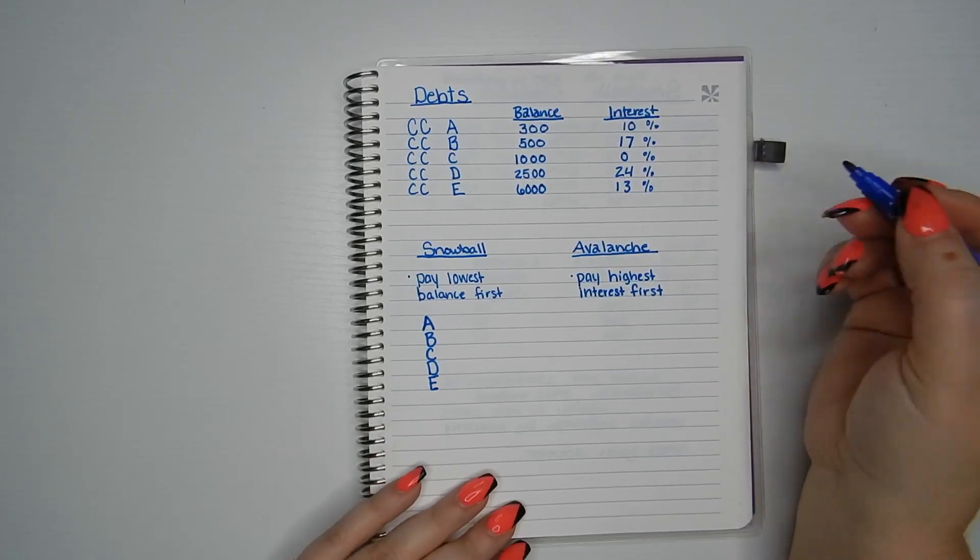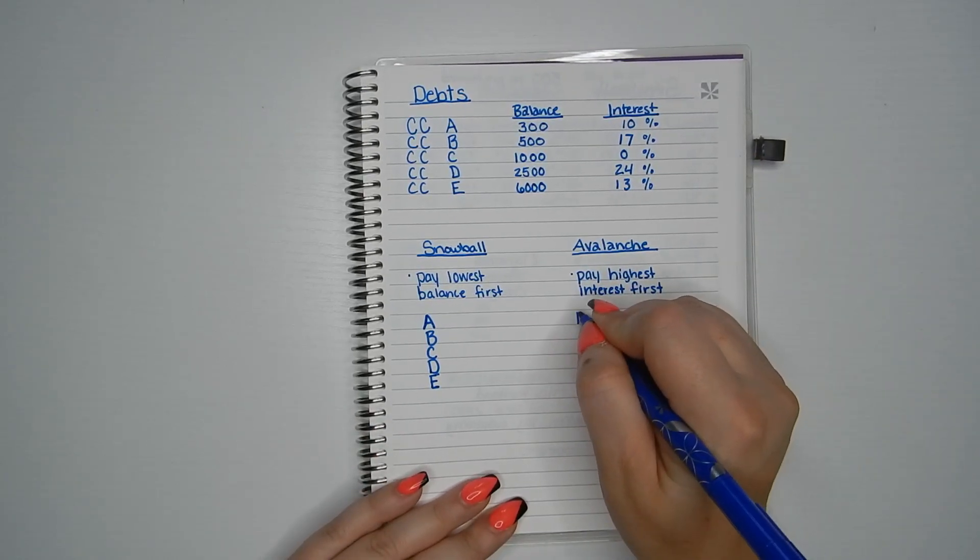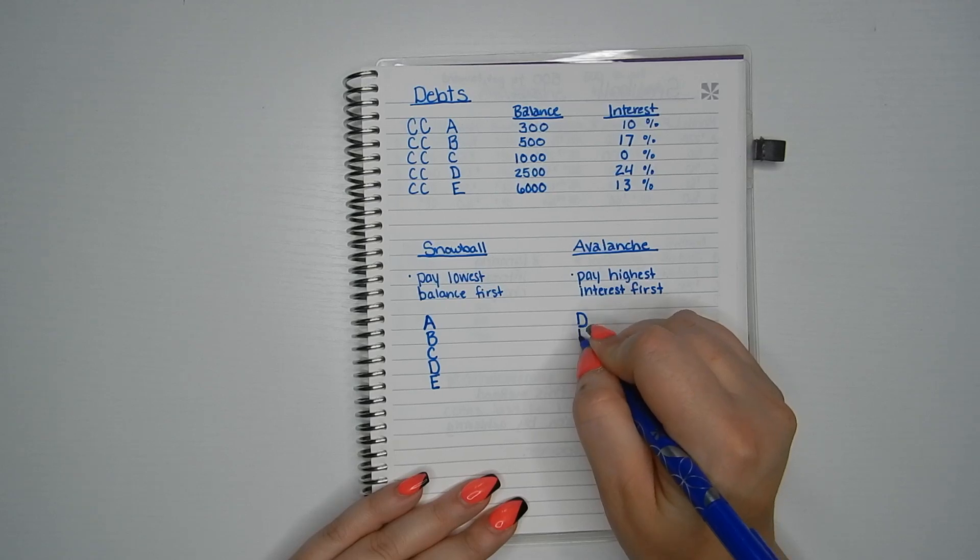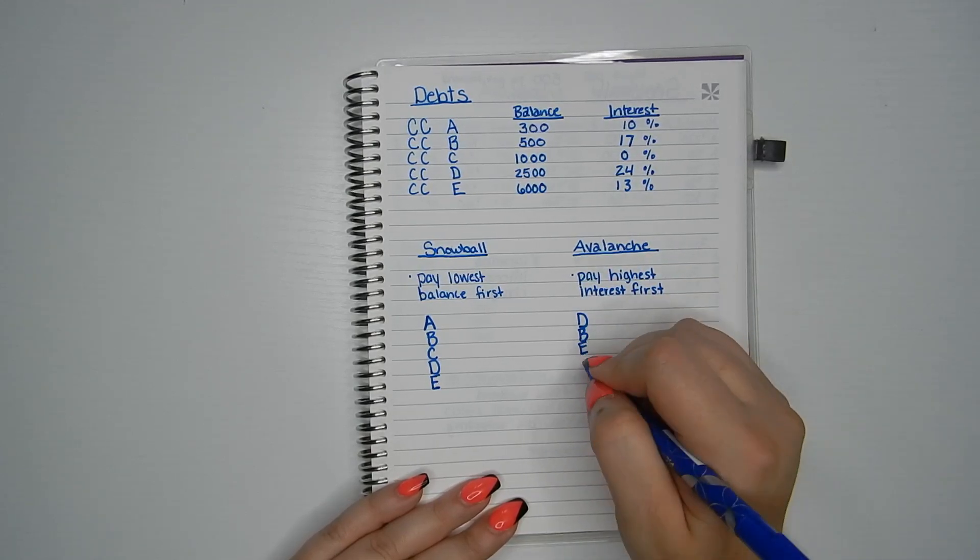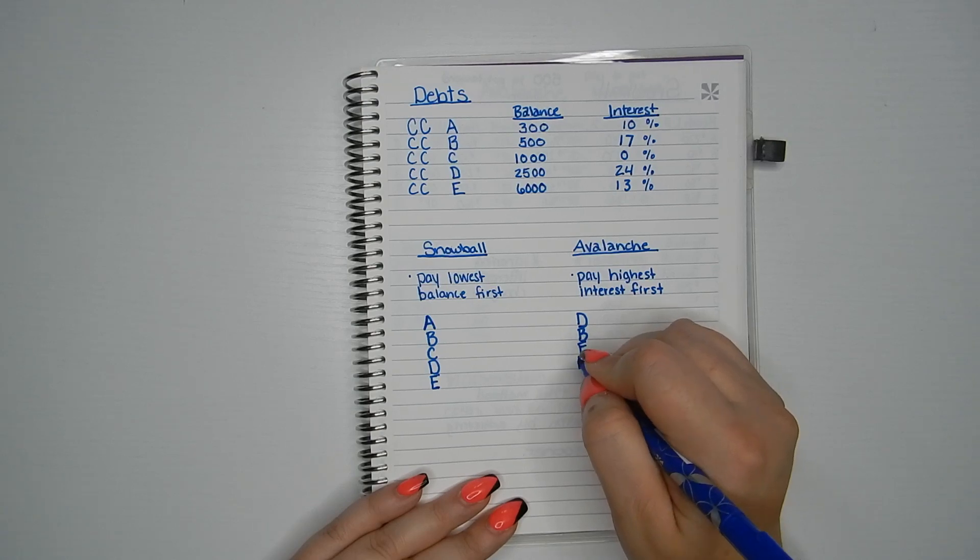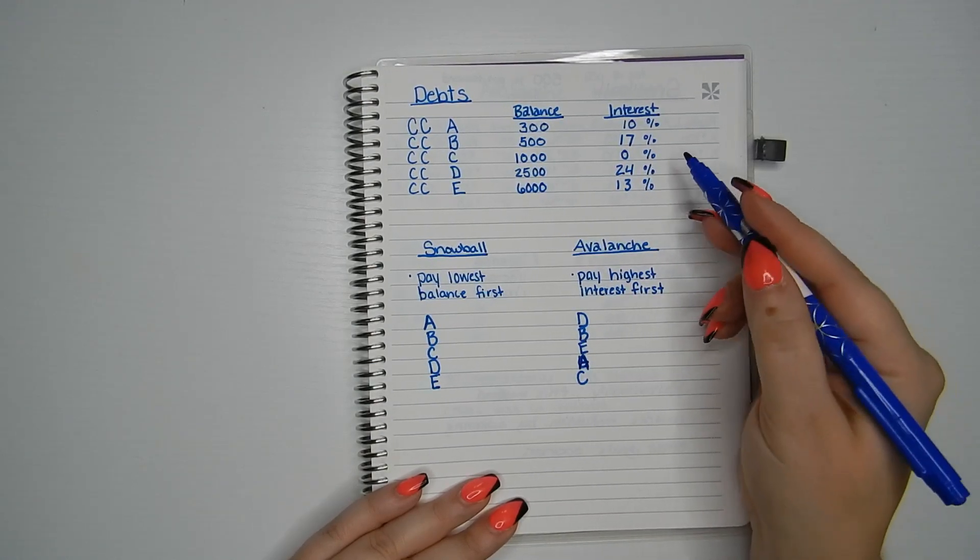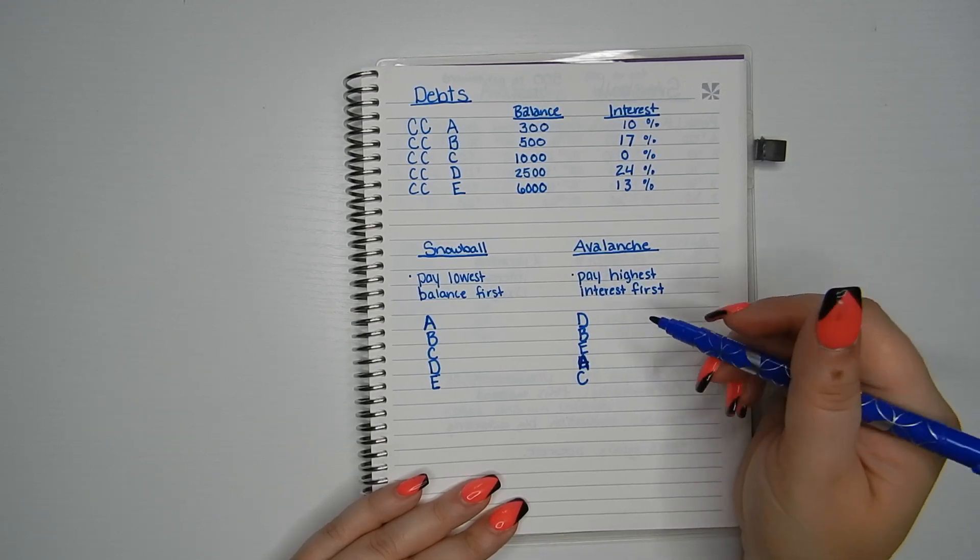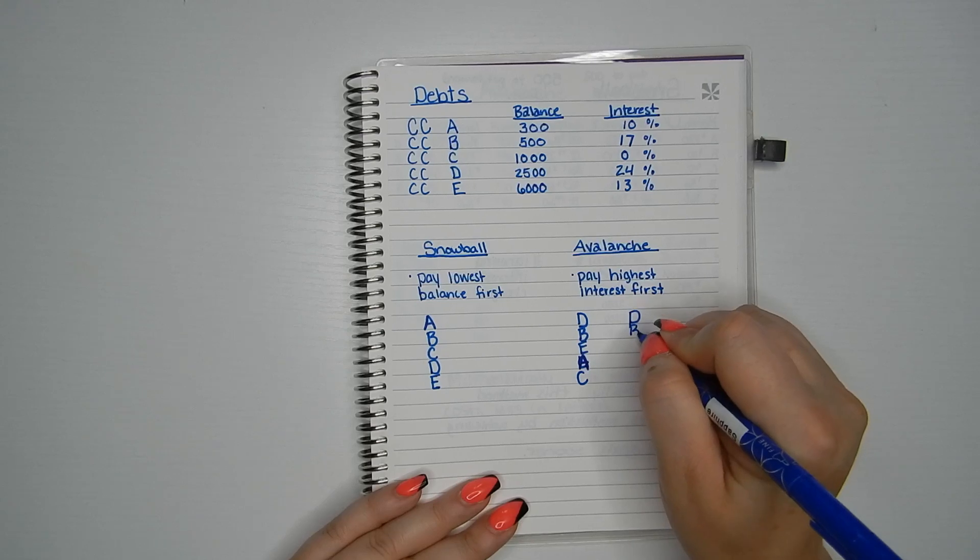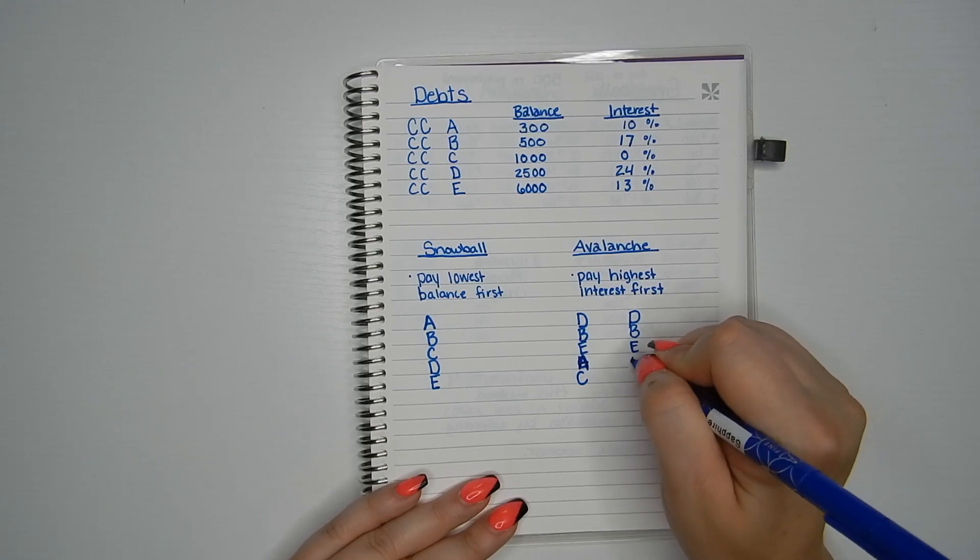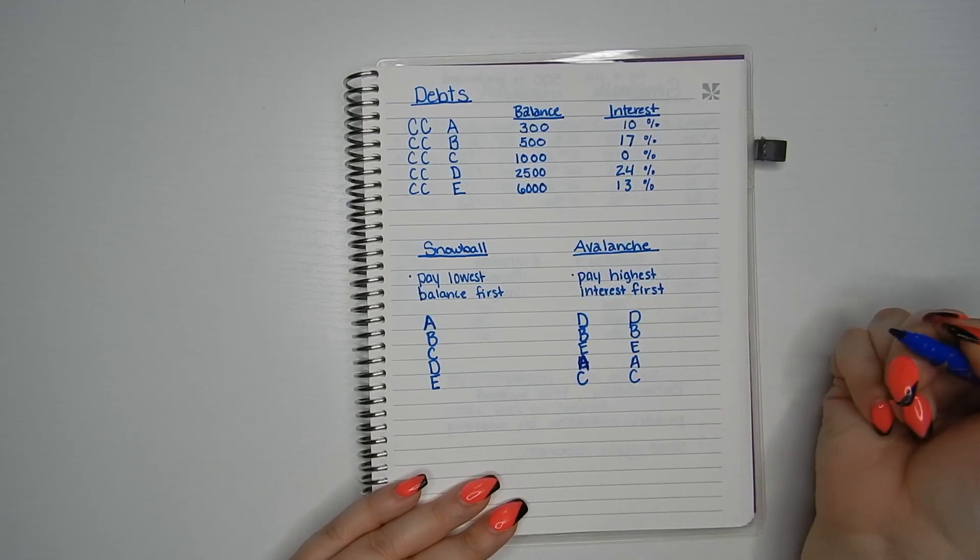If I was doing the avalanche method, I would pay off D, then B, then E, then A, and then C because C has a 0%, so that's the one I would do last. So let me rewrite those again just so that it's clear: D, B, E, A, C.